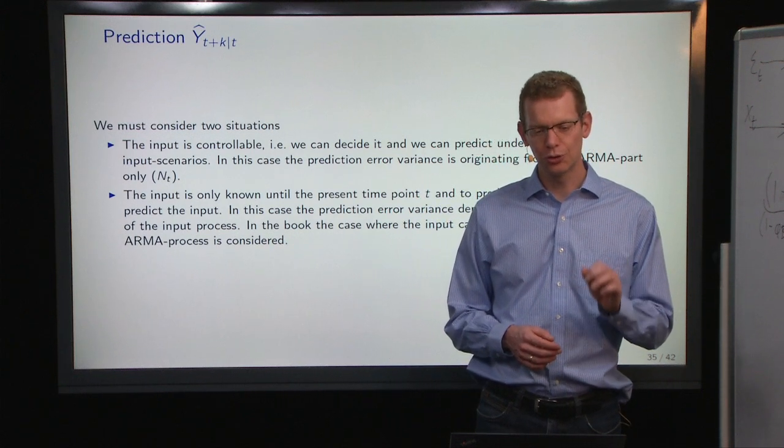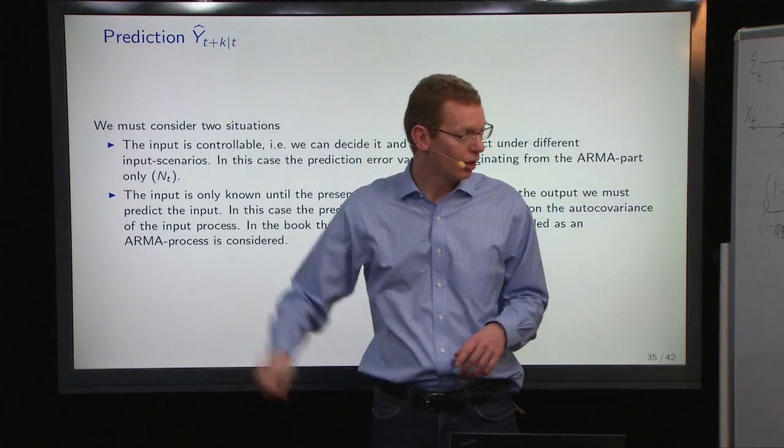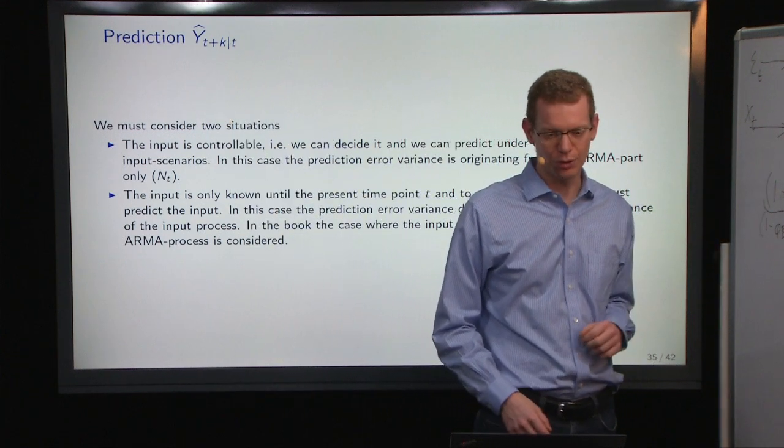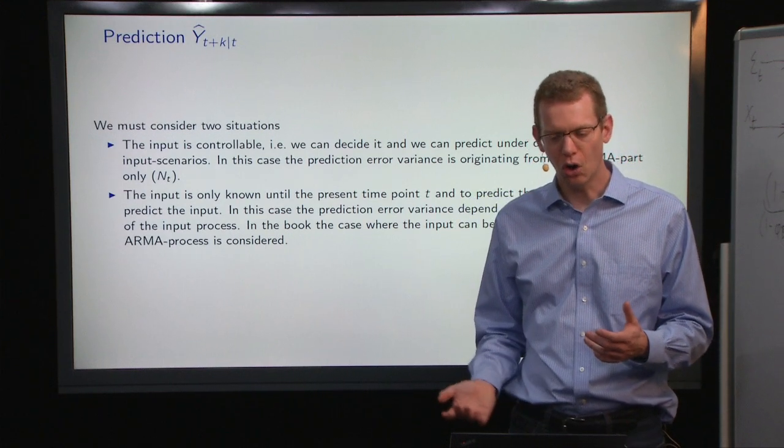Now, the next step is to do predictions. So, to make a K-step prediction in a transfer function model, there are basically two cases.